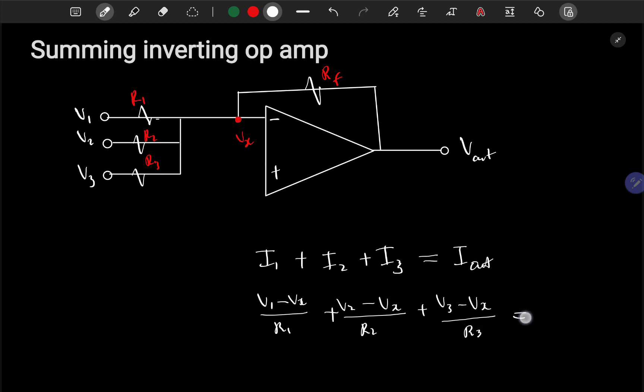...should equal vx minus vout all over rf, my resistance here. So from here I think we can do some math.